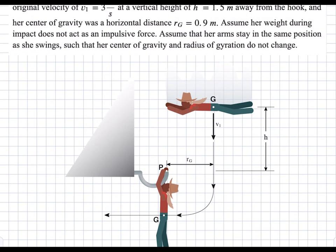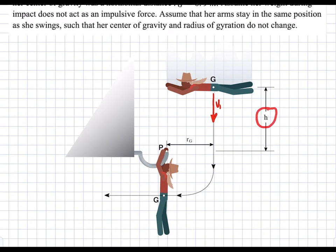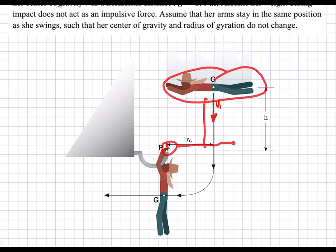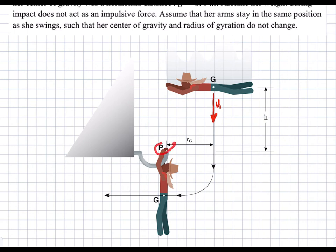Initially, the person is traveling vertically down with an initial velocity v1, and after they travel a height h, their velocity increases and they're still moving horizontally. We can use work-energy to find the final velocity before the person hooks on. After the person hooks on to P, they purely start to rotate — this is where angular momentum will come in.